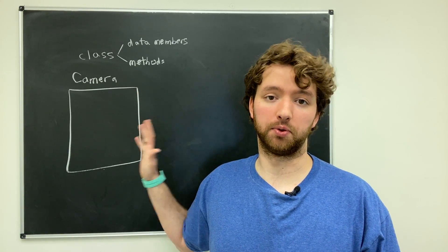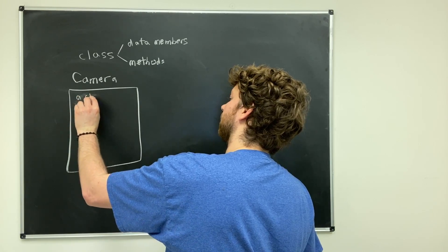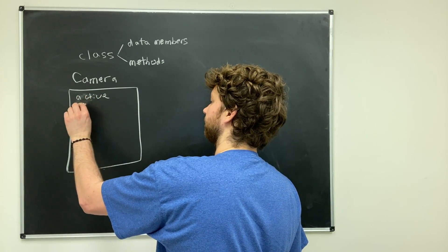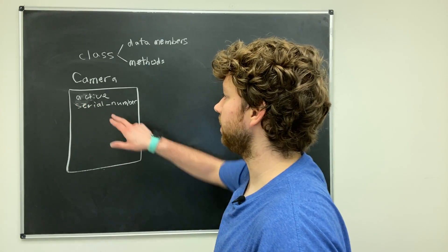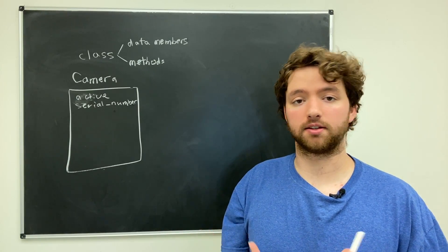A camera might have an attribute whether or not the camera is active. It could have a serial number. These are both examples of data members.